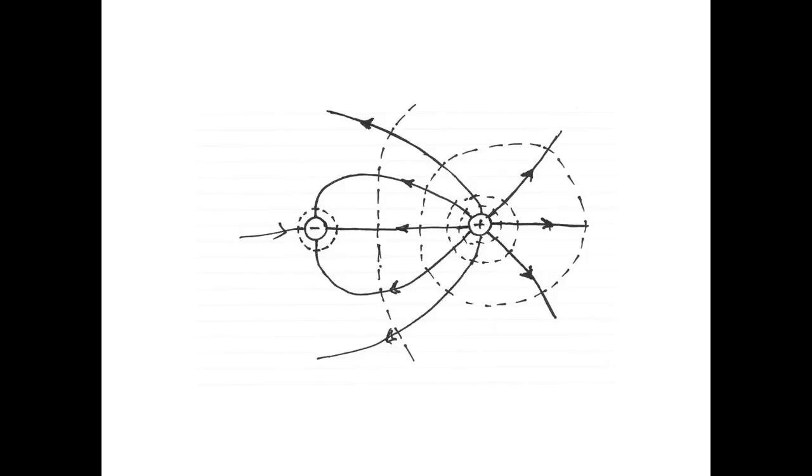Notice that it's almost vertical right when it gets between the two charges, and then it starts curving. And you can imagine that on the right side of the picture it would be almost circular.